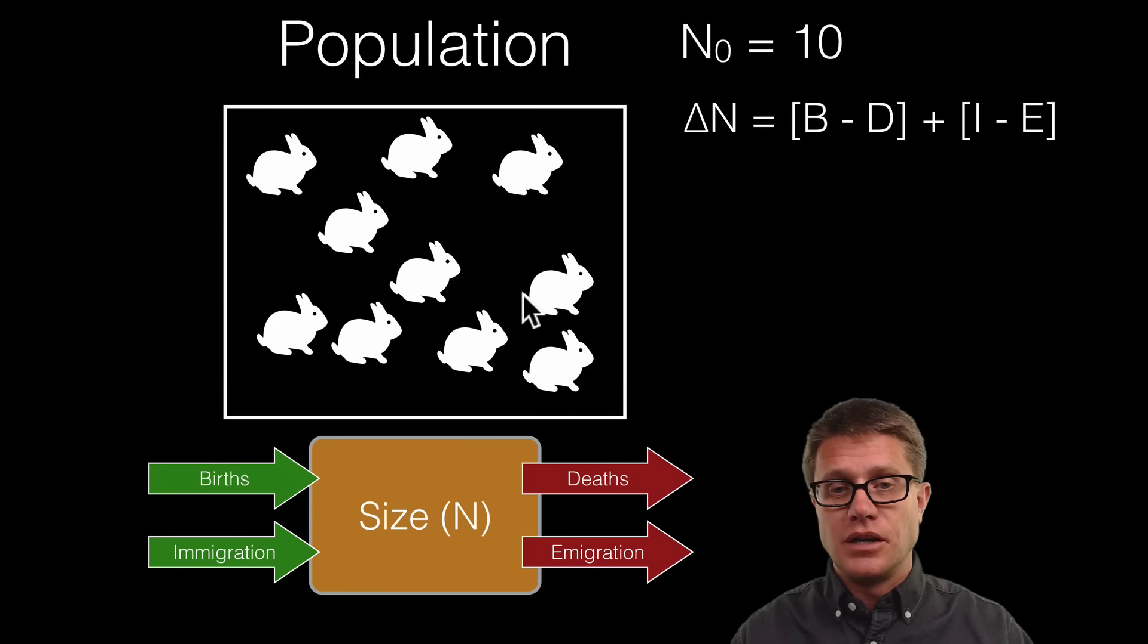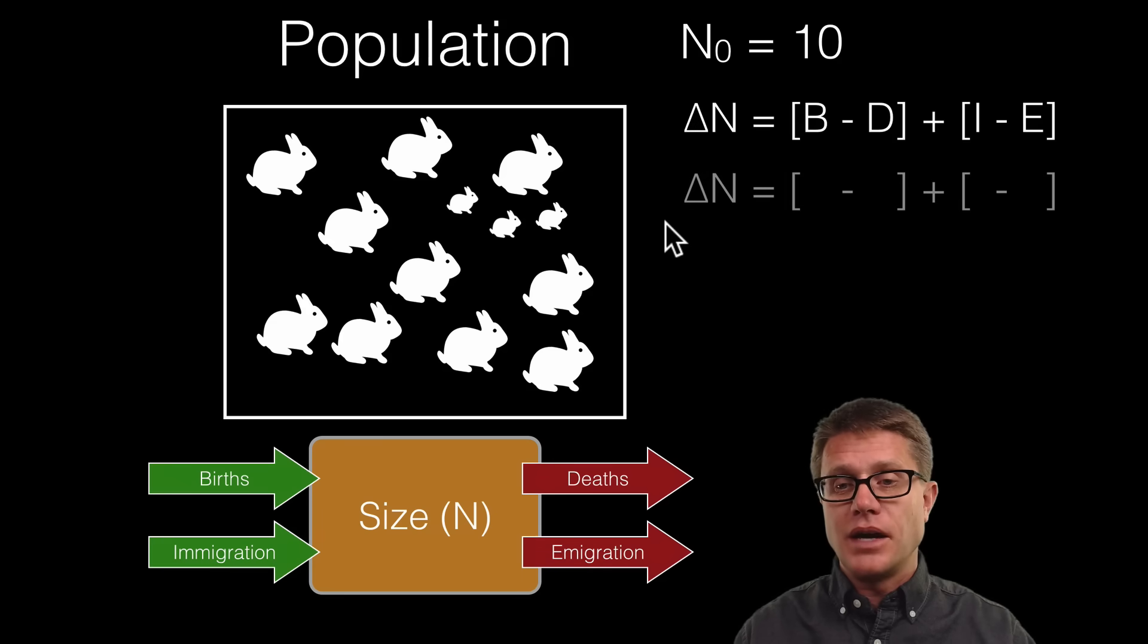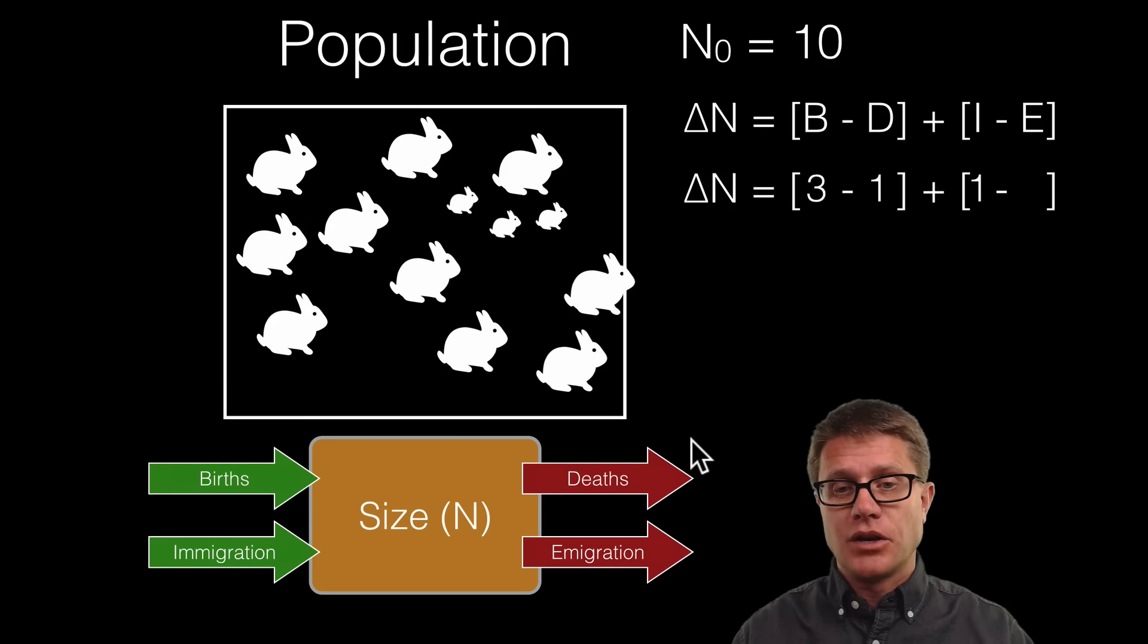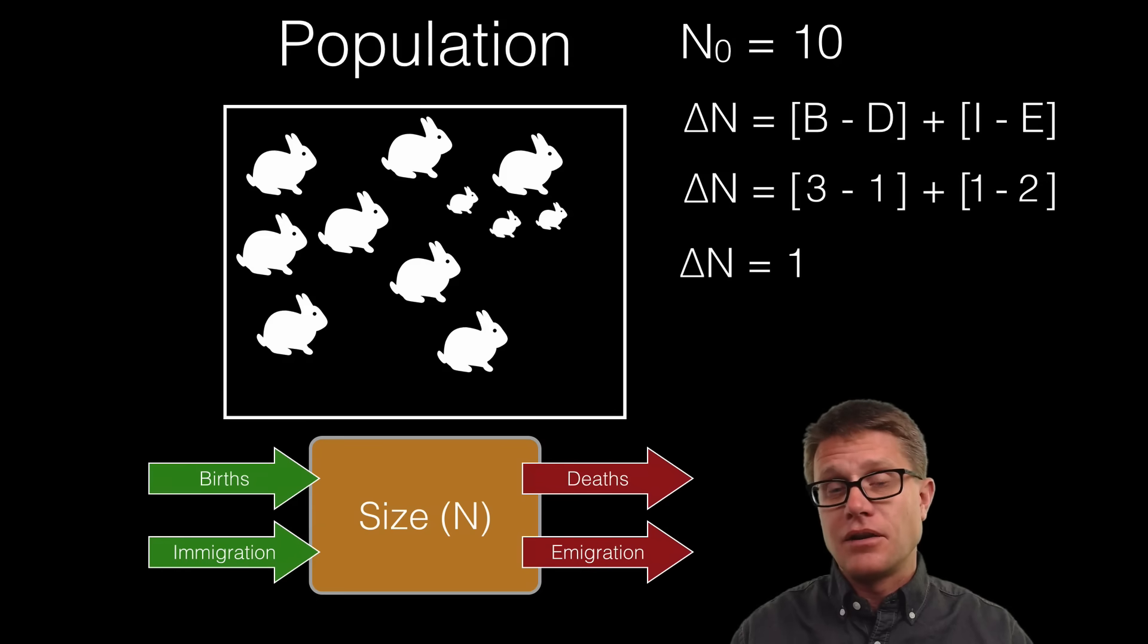So let us look at this population over here and see what happens. So this rabbit gave birth to 3 other rabbits. And so if we write this out, what is our births going to be? It is going to be 3. Now let us watch the population again. So you can see one of the rabbits died. And so we are going to put a 1 here in the deaths. We could look at immigration. How many come in? It looks like just 1. So we would put a 1 right here. And then how many emigrate? It looks like 2 left. And so we would put a 2 right here. And so the delta n or the change in n is simply going to be 3 minus 1 plus 1 minus 2 or 1. That is the change. Or we have seen an increase in 1.